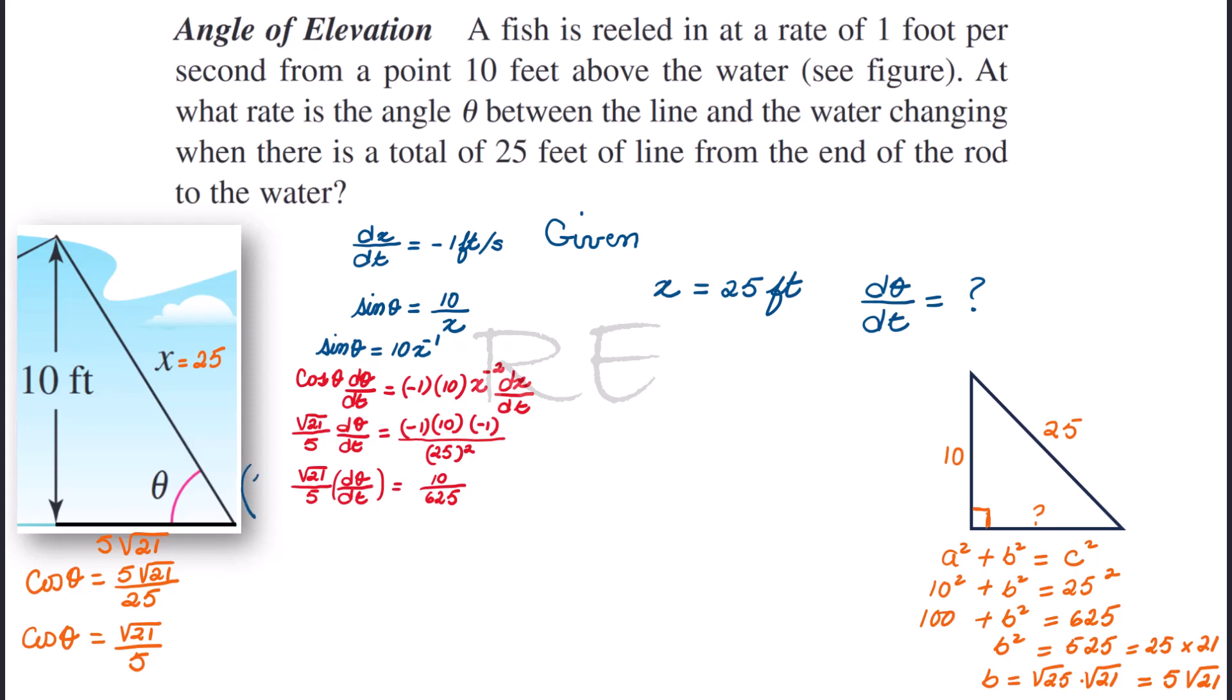We're going to multiply both sides by the reciprocal of square root of 21 over 5 to get dθ/dt and clean up after. So dθ/dt equals, well, we can cross-cancel zeros. And 5 goes into itself once and into 625, 125 times, times square root of 21.